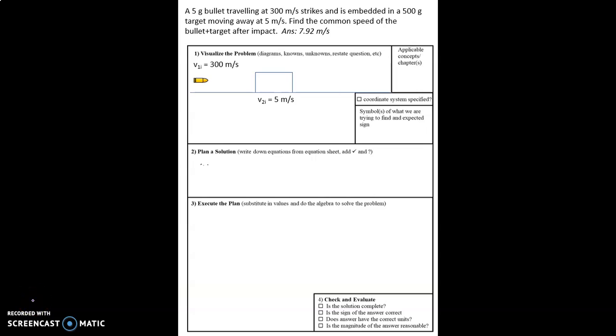In this video we're looking at a 5 gram bullet traveling at 300 meters per second that becomes embedded in a 500 gram target that was already moving away at 5 meters per second.